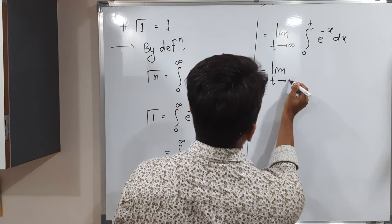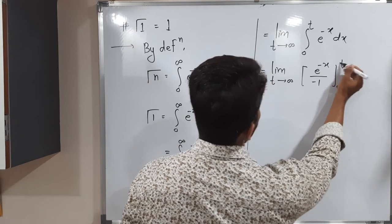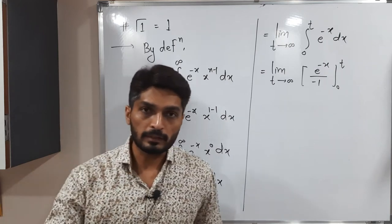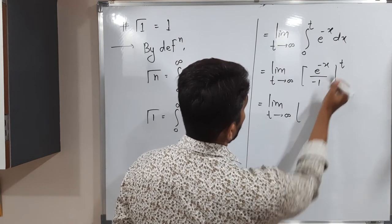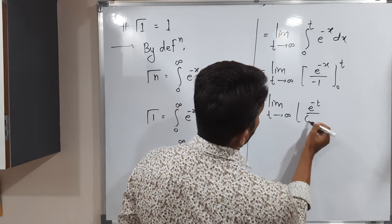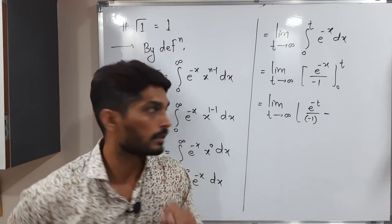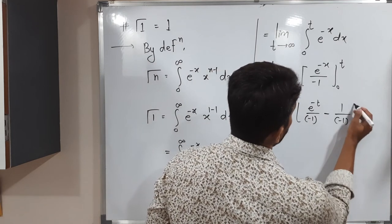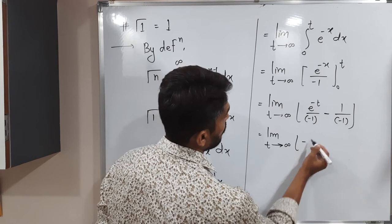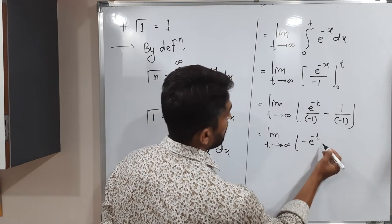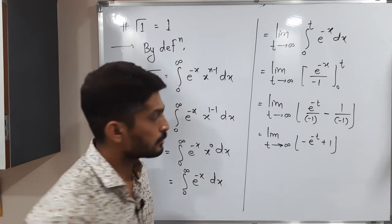Now let us integrate. The integration of e raised to minus x is e raised to minus x upon minus 1, evaluated from 0 to t. Applying the limit as t tends to infinity: putting the upper limit t gives e raised to minus t upon minus 1, minus putting the lower limit 0 gives e raised to 0 upon minus 1, which equals 1 upon minus 1. Simplifying, the minus sign moves to the numerator: minus e raised to minus t, minus minus gives plus, so we have minus e raised to minus t plus 1.